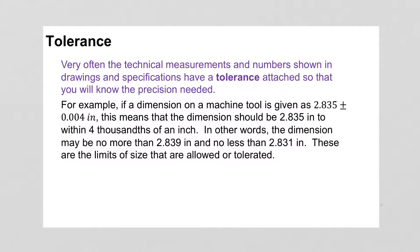Tolerance. Very often, technical measurements and numbers shown in drawings and specifications have a tolerance attached so that you know the precision needed. For example, a dimension on a tool could be 2.835 plus or minus 4 thousandths of an inch. That means the dimension should be 2.835 to within 4 thousandths of an inch — no more than 2.839 or less than 2.831.